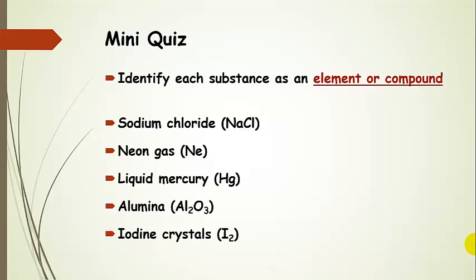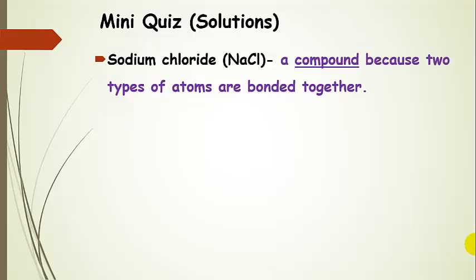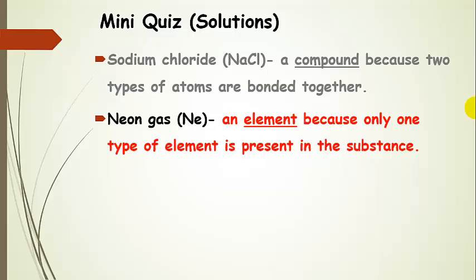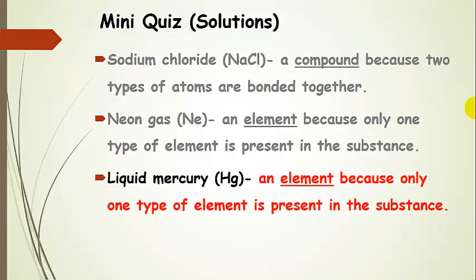Here's a little practice: identify each substance as an element or a compound. Sodium chloride is a compound because two types of atoms are bonded together — sodium atoms and chlorine atoms, held together with electrostatic attractions as ionic bonds. Neon gas is an element because there's only one type of element present in the substance — you can look on the periodic table and see neon. Liquid mercury is also an element because there's only one type of element present; you'll see Hg for mercury in the transition metal section of the periodic table.